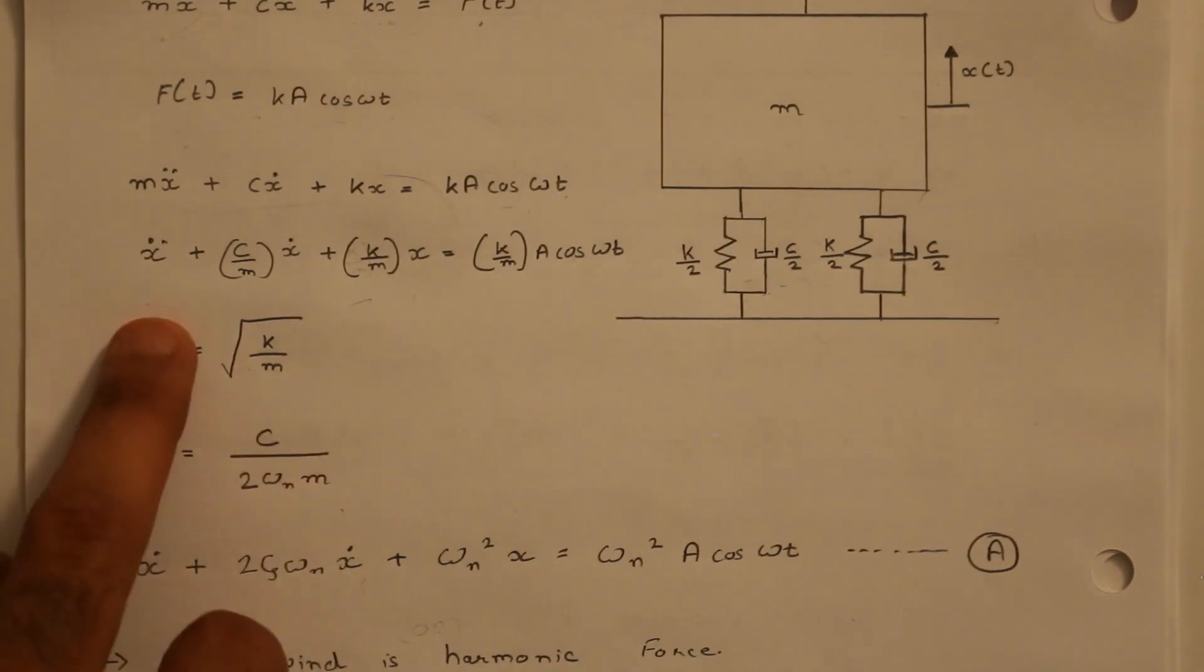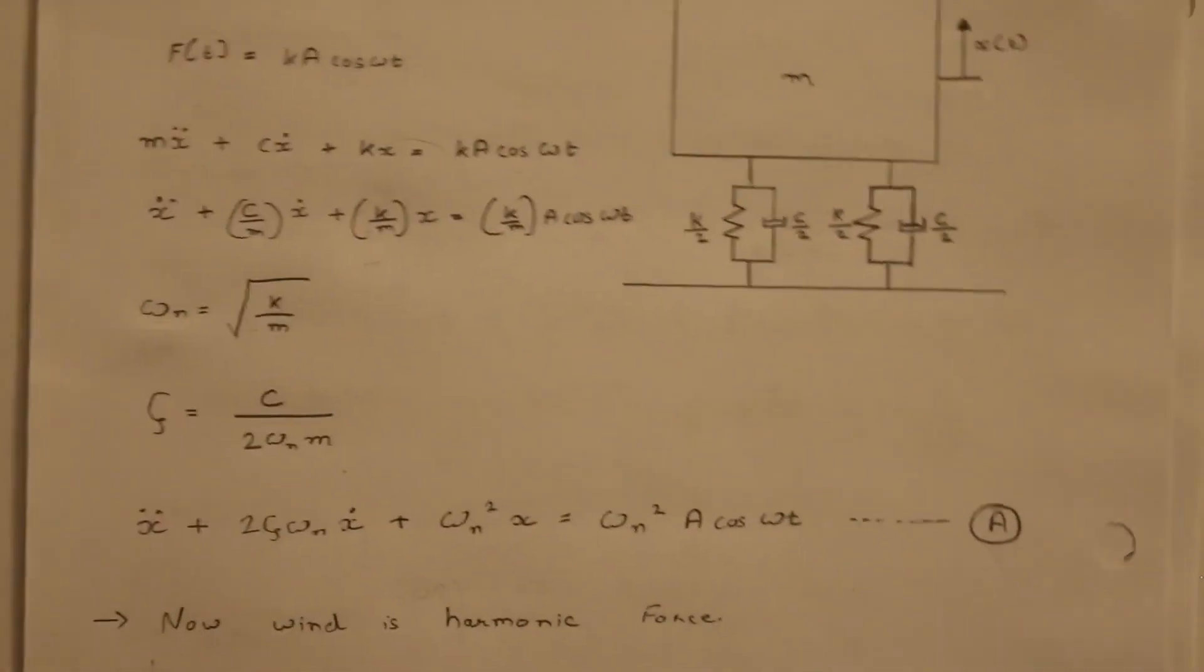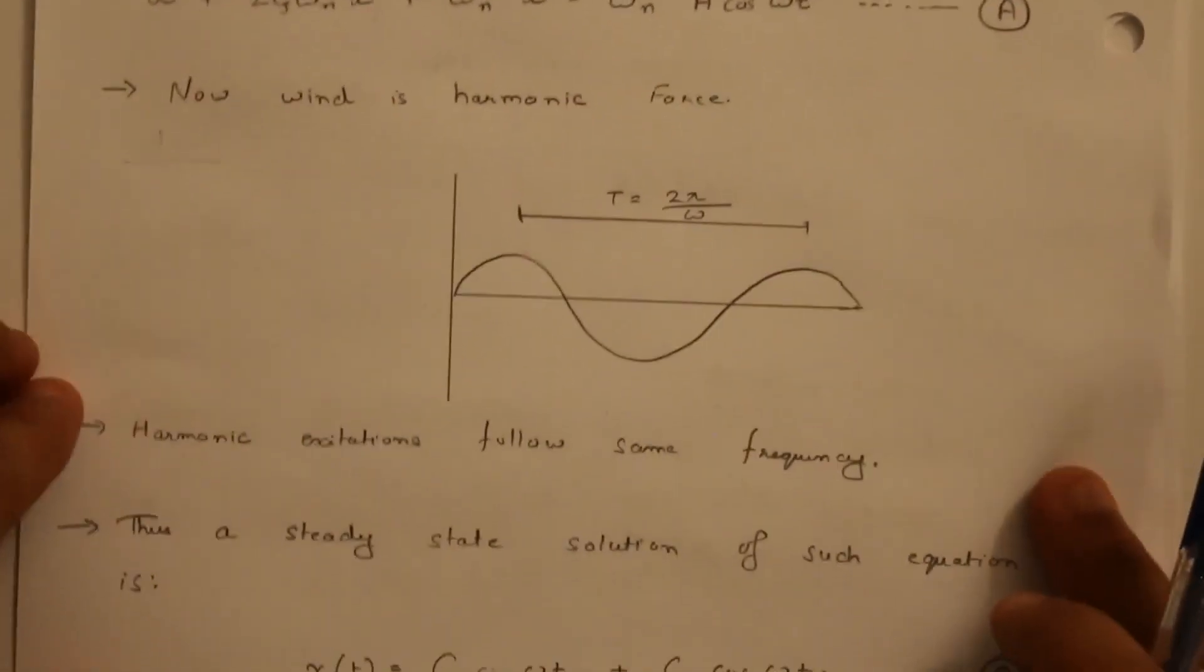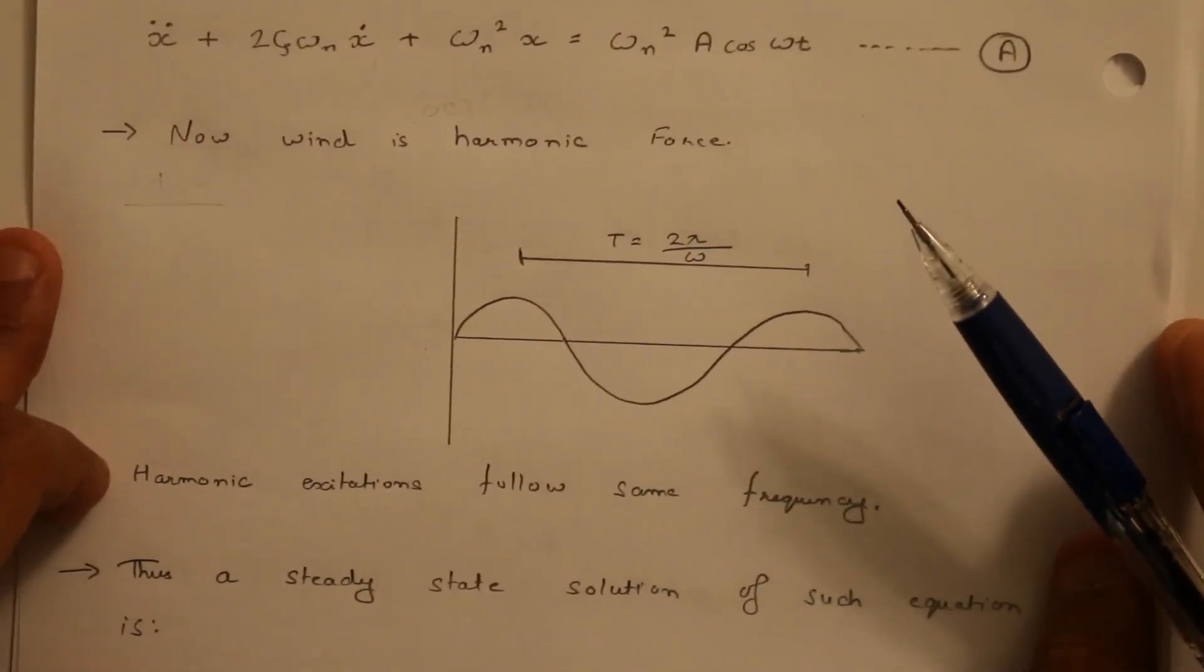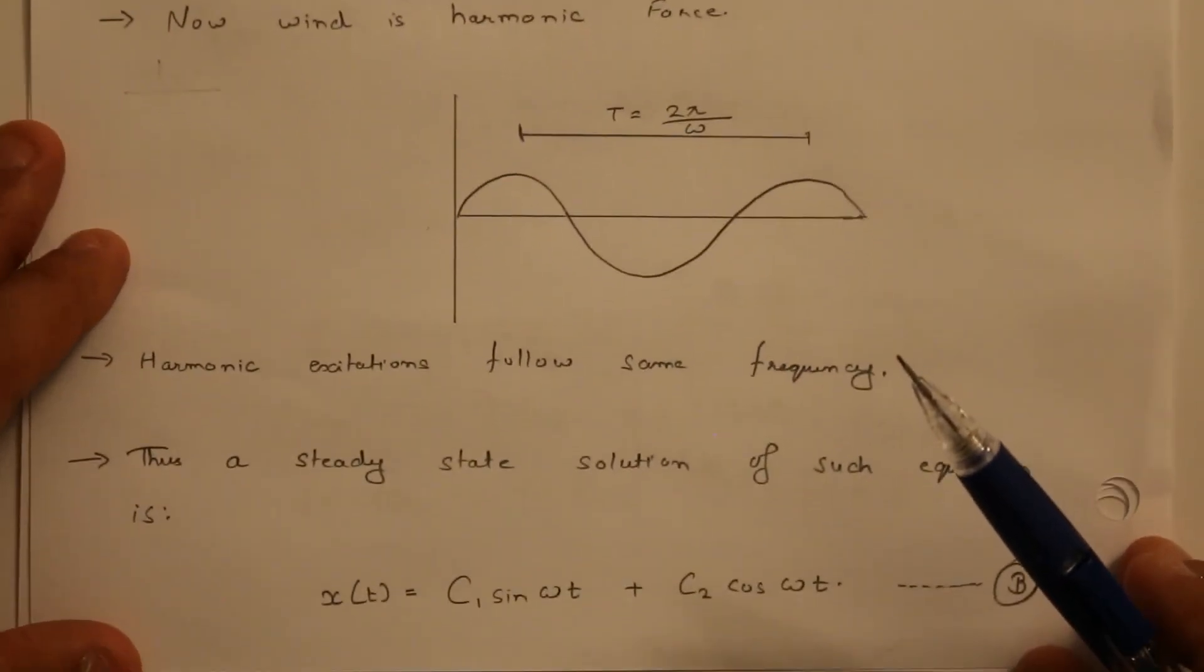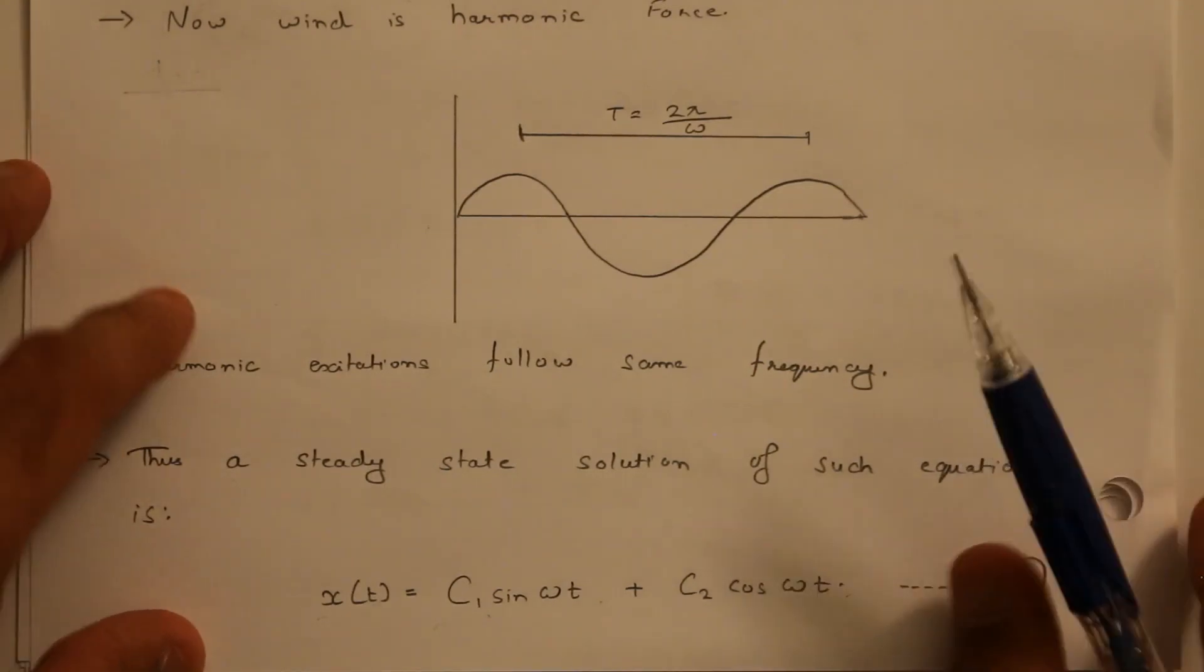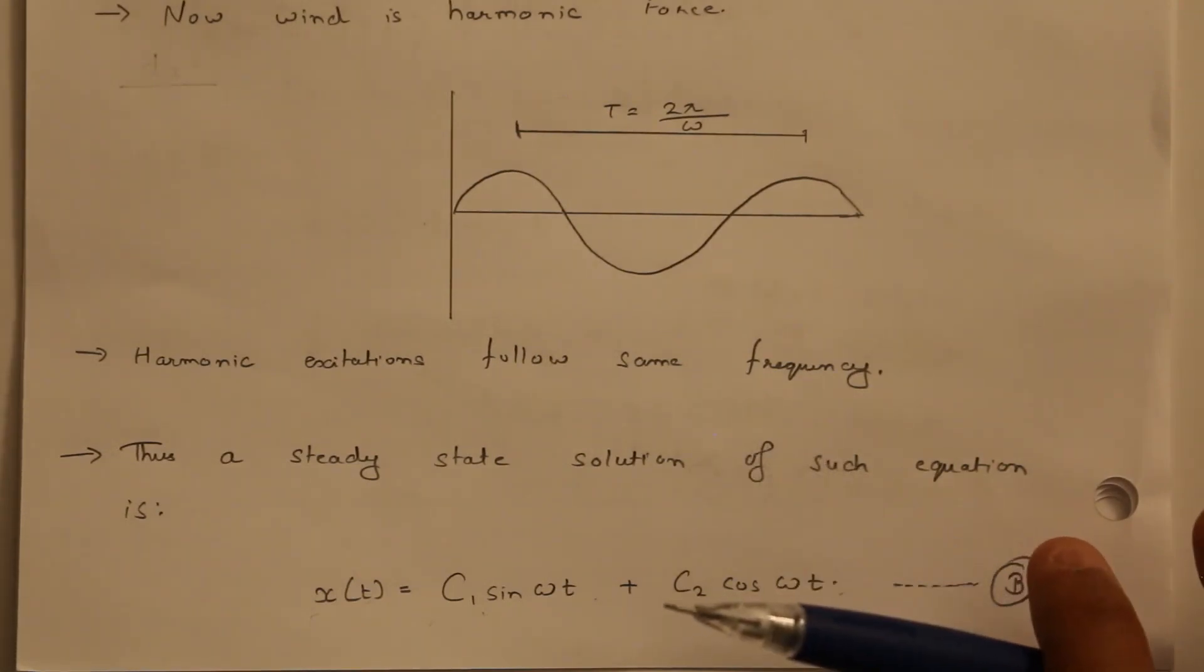Now once I do that I replace all the values of ωn and ζ in equation above and I get x double dot plus 2ζωn x dot plus ωn² x is equal to ωn² a cos ωt. Wind is a harmonic force constant period it just generates the load at a particular frequency nothing else. Now this equation is very common in differential equations it's a homogeneous equation so what do you mean by that there is a ready steady state solution for such kind of equations. It is known as x(t) is equal to c₁ sin ωt plus c₂ cos ωt. That's a very basic differential equation mathematics because the equation is homogeneous. If the equation is non-homogeneous you cannot get a steady state solution for it.